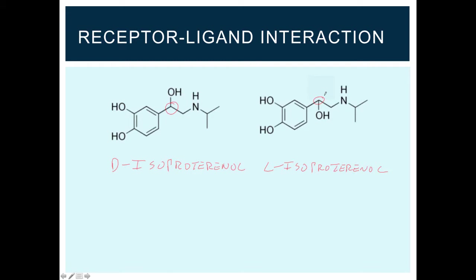D isoproterenol is a beta-receptor antagonist. Whereas L isoproterenol is a beta-receptor agonist. You can see that the change in the orientation of that hydroxyl group makes a huge difference with the way that this drug interacts with this receptor. In one case, it's an antagonist that will block the activity of that receptor. And in the other case, it's an agonist that will actually stimulate the receptor.